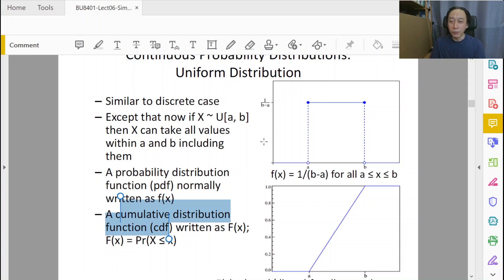In a uniform distribution you are given the starting point and the ending point, a and b, nothing spectacular. You can take it as an example, one and two, one and six, so it's like a continuous dice. You can take any number between one to six such as 1.1234.